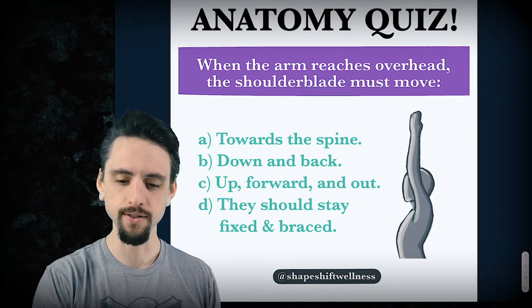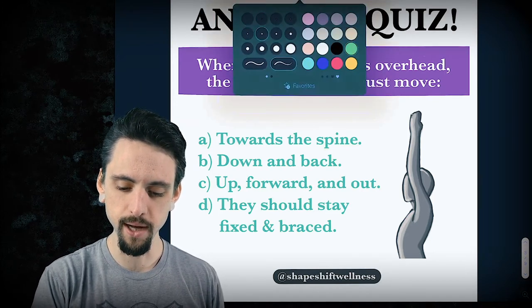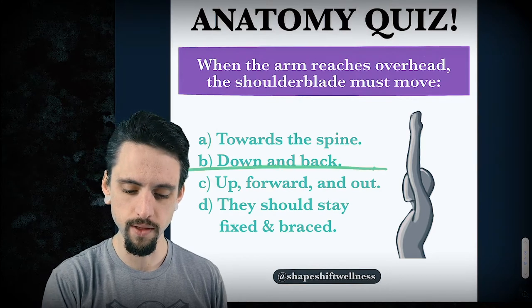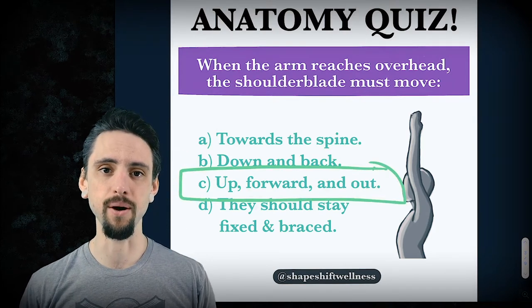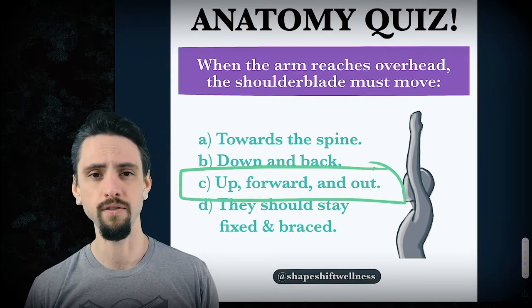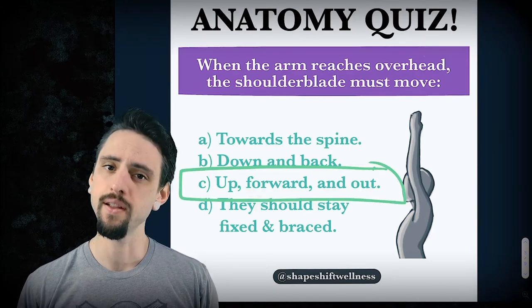The correct answer is that the shoulder blades must move with the arms. They must move up, forward and out. So today's video is talking about upward rotation of the scapula. Let's get to it.